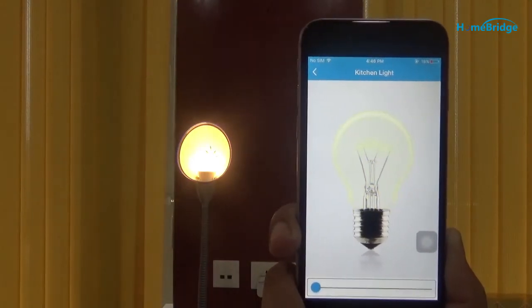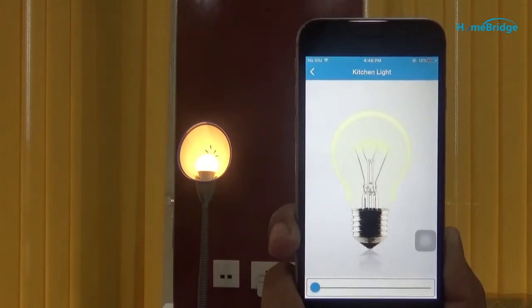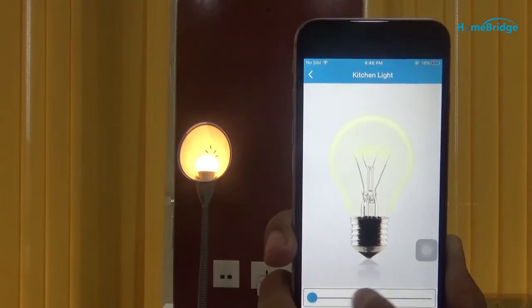Now let's reduce the luminance by sliding the bar to the left side. We can increase the luminance by sliding the bar to the right side.